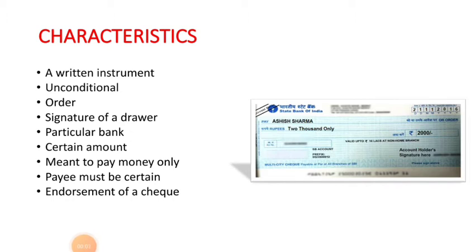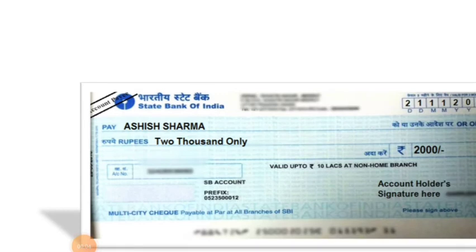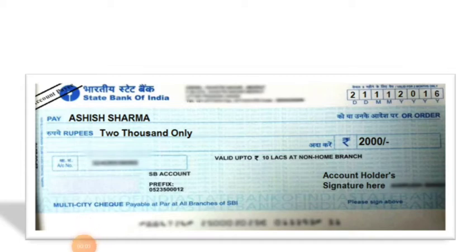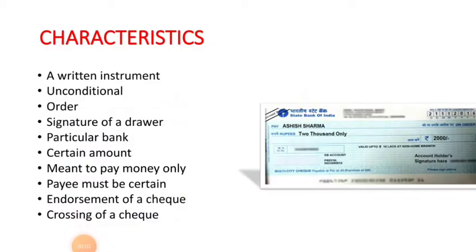Next is endorsement of a check. It means signing on the back of a negotiable instrument, i.e., a check, with the aim of transferring its ownership to another person. And the last characteristic is crossing of a check. It is a process of drawing two parallel lines on a check with or without certain words. The purpose is to protect the drawer against loss by theft or forgery. Crossing of a check also ensures that payment is made to the authorized person only by transferring the amount directly into his or her account.